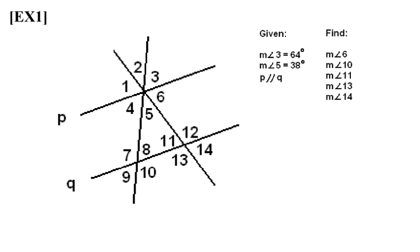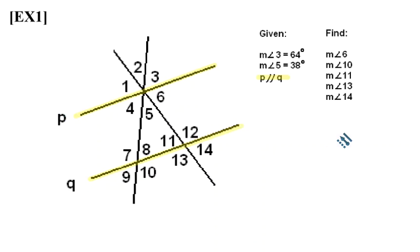One of the items we initially notice is that lines P and Q are parallel. It could be a good idea to visually denote that those lines are parallel, either by highlighting those lines or putting a scratch line through them so that they're more bold, and we remember as we solve that those lines are parallel. Additionally, it will help us to put the given information on the picture: the measure of angle 3 is 64 degrees, and the measure of angle 5 is 38 degrees.